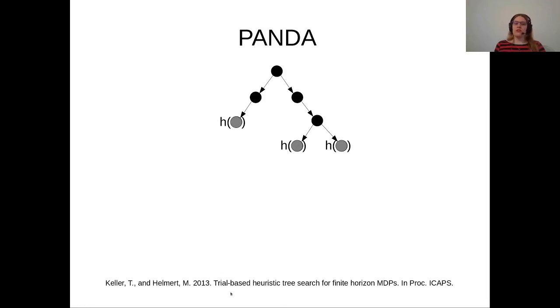This is a framework called trial-based heuristic tree search that was discovered by Keller and Helmert, and we have adapted it to PANDA and hierarchical planning.